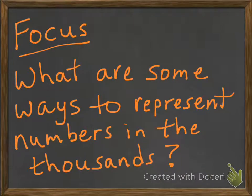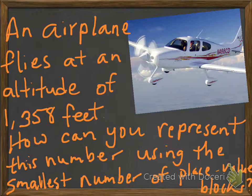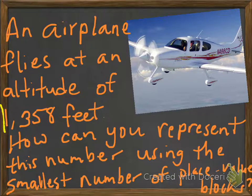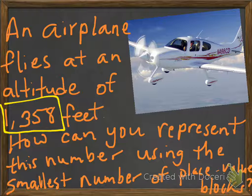Our focus is, what are some ways to represent numbers in the thousands? So let's take a look at an example. Let's say an airplane flies at an altitude of 1,358 feet. How can you represent this number using the smallest number of place value blocks?